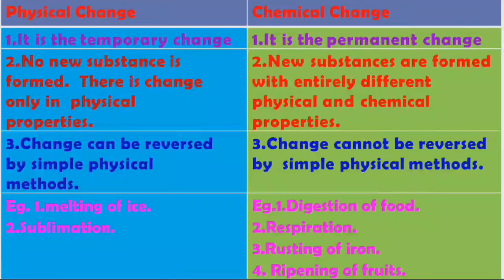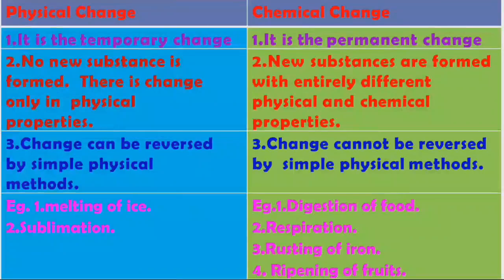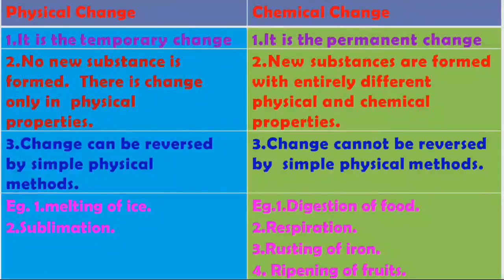In a chemical change, a new substance is formed with entirely different physical and chemical properties. Physical change can be reversed by simple physical methods — by heating or by cooling, we can reverse the reaction. But chemical change cannot be reversed by simple physical methods. Examples for physical change: melting of ice and sublimation.